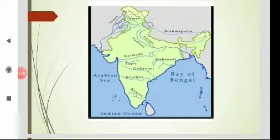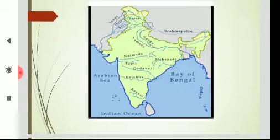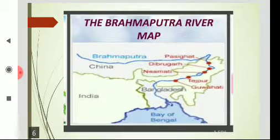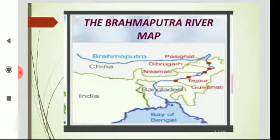River Brahmaputra flows towards east, then enters into Arunachal Pradesh. It also flows to Bangladesh, then it falls into Bay of Bengal. In this map you can well observe the course or flow of Brahmaputra river — it enters into Arunachal Pradesh, then flows to Assam, then goes to Bangladesh, then falls into Bay of Bengal.